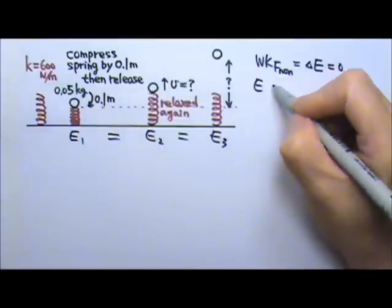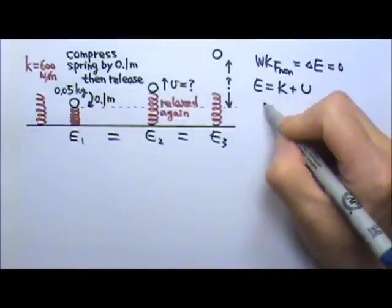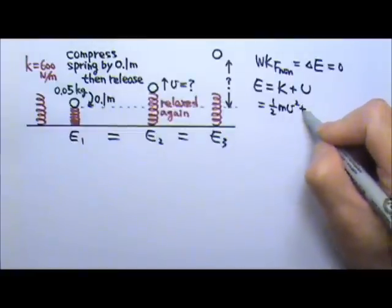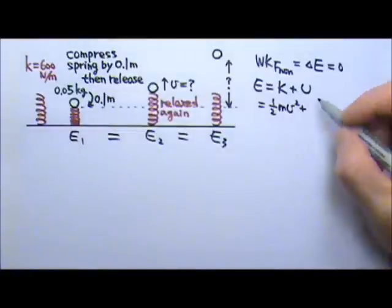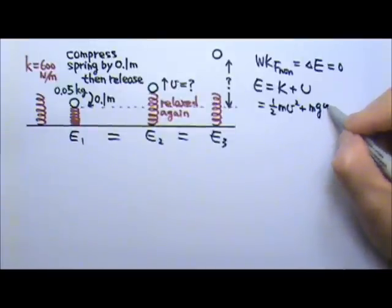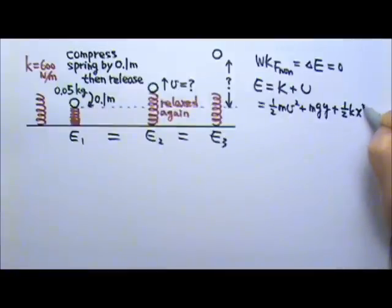The total mechanical energy includes kinetic energy and potential energy. Kinetic energy is 1/2 mv squared, and we've learned about two different kinds of potential energies: gravitational potential energy mgy, and the potential energy stored in a spring 1/2 kx squared.